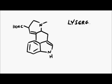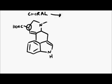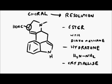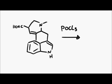So this has completed the synthesis of lysergic acid. It won't have escaped notice that this center is chiral, and so the final step was a resolution by forming the methyl ester with diazomethane, and then a hydrazone with hydrazine, and a crystallization to resolve the two different enantiomers.